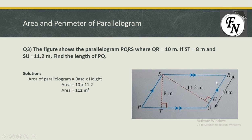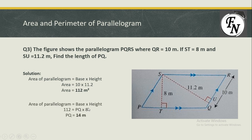Using base 10 and height 11.2, the area equals 112 meters squared. Now I know the area and the height of 8 meters, and PQ the base is missing. Plugging into the formula: 112 equals PQ times 8. Dividing both sides by 8, we obtain PQ equals 14 meters.